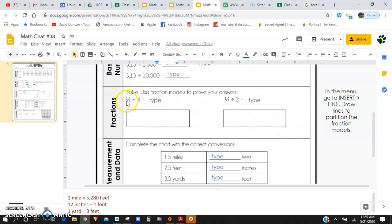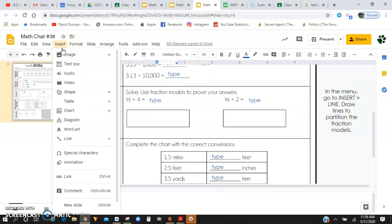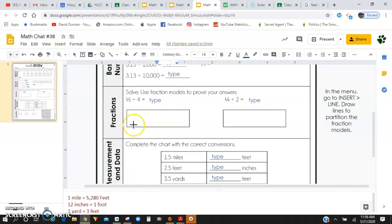So if I have one half divided by four, they want you to draw the lines. And to do that, you're going to want to go to the insert line and draw lines, partition the fraction models. So if I go to insert and I go down to line and I draw a line, okay, so I have one half divided by four. I'm going to take this and I'm going to partition it into a half. Okay, there's my half.